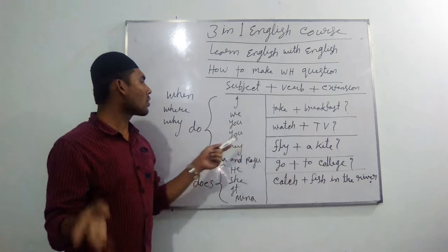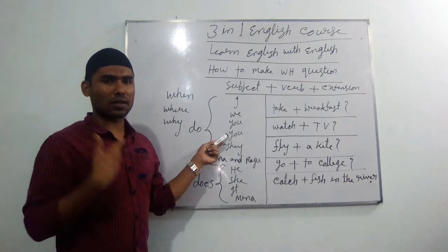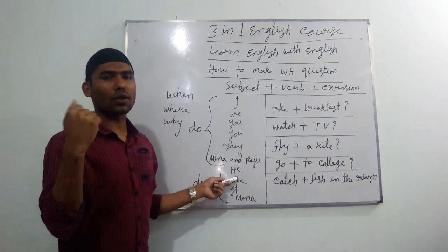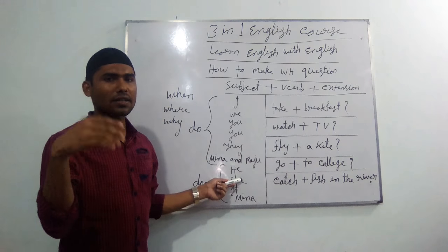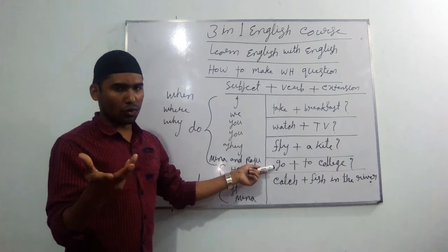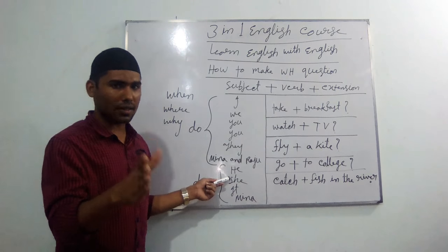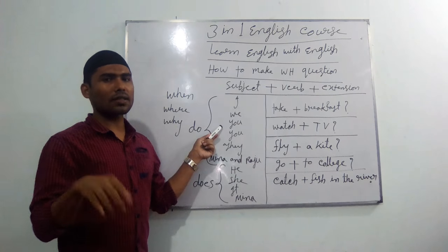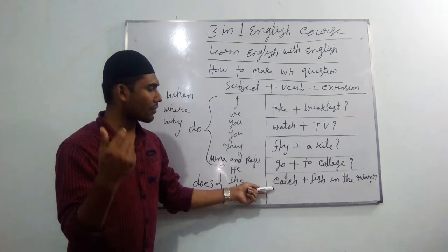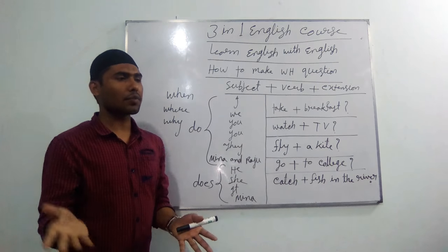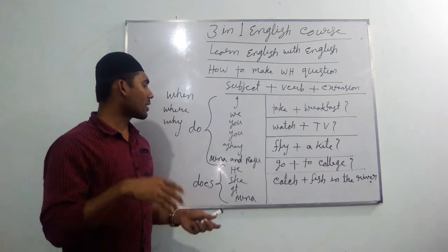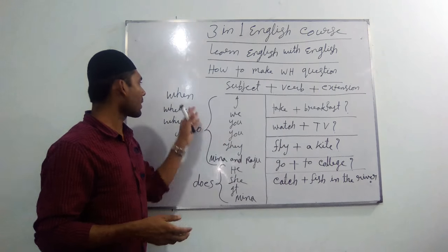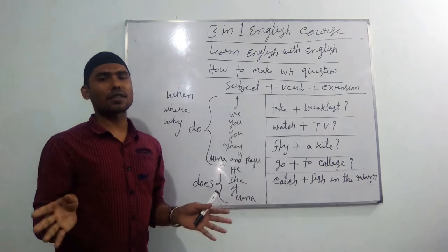Now let's practice with other verbs. 'When do I watch TV?' — I watch TV at night. 'When do you fly a kite?' — I fly a kite in the afternoon. 'When does she fly a kite?' — She flies a kite in the afternoon. 'When does she go to college?' — She goes to college in the morning. 'When do you go to college?' — I go to college in the morning. 'When do I catch fish in the river?' — I catch fish in the river in my free time. By this way, you can practice using 'when' with all extensions.